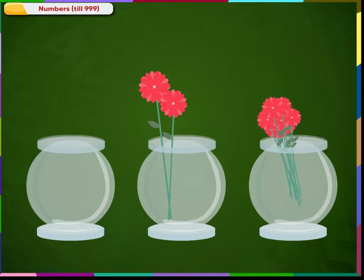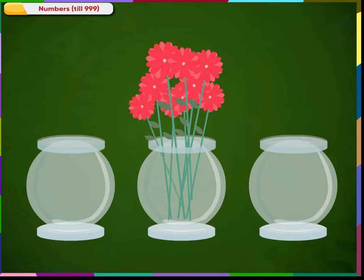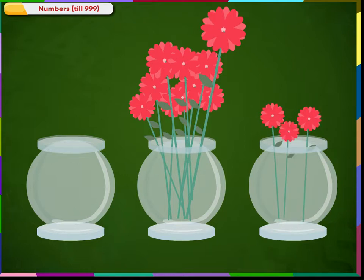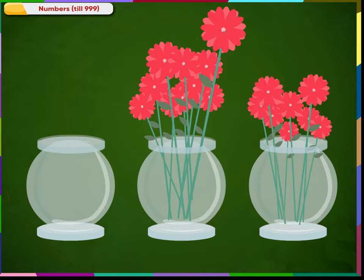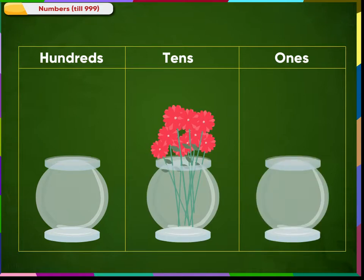If we keep counting like this, we get 30, 40, 50, 60, 70, 80, 90, 91, 92, 93, 94, 95, 96, 97, 98, 99. We can place the flower vases in a place value chart.